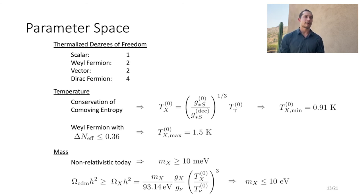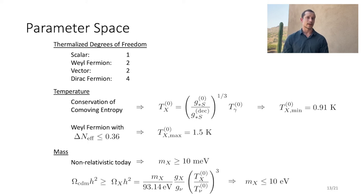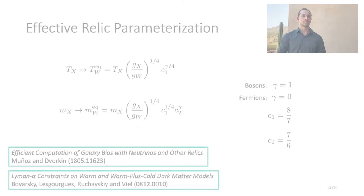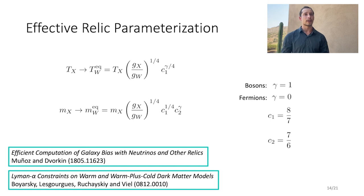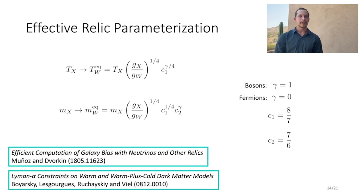As for the mass, if we want our relic to be non-relativistic today, its mass must exceed its temperature, giving a lower bound of 10 meV. We also know that the contribution of a relic to cold dark matter should not exceed the known abundance, and it is conservative to assume the relic does not compose more than 10% of the cold dark matter. For a Weyl fermion with the lowest possible temperature, this gives an upper bound of 10 eV on the mass. We can also simplify this analysis by recasting any fermionic or bosonic relic as an effective Weyl fermion relic with an equivalent effect on the cosmology under a suitable reparameterization, allowing us to write a single analysis for Weyl fermions and generate results for other relic types by shifting the mass and temperature.